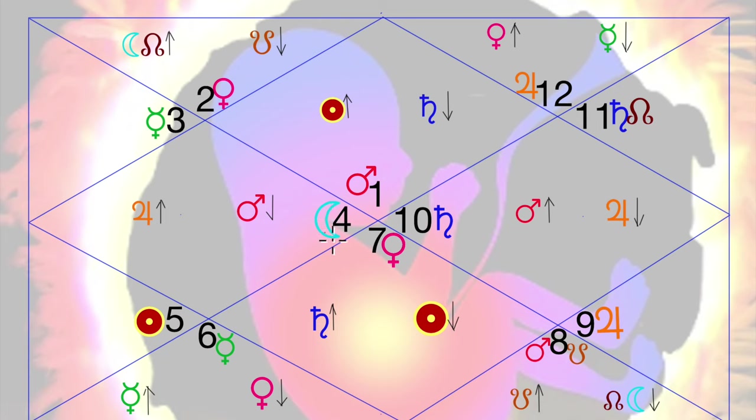For the house of Cancer, Jupiter is exalted, Mars is debilitated. For the house of Capricorn, ruled by Saturn, Mars is exalted, Jupiter is debilitated.